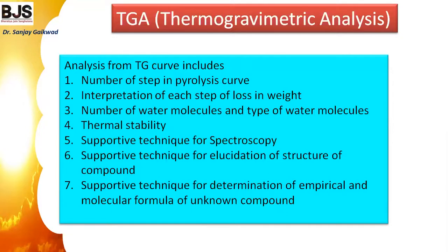TGA is a supportive technique for spectroscopy and structural analysis. Combined with structural analysis, it aids in elucidation of the structure of compounds. Along with IR and NMR, this technique provides strong support for identifying what functional groups and compounds are present in the molecule. It is also a supportive technique for determining the empirical and molecular formula of an unknown compound.